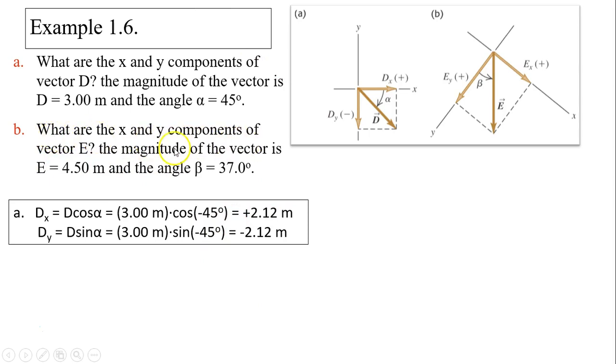Example B. What are the x, y components of vector E? Magnitude of vector E equals 4.5 meters and angle beta equals 37 degrees. This question is a little different because x is pointing right, but positive y is down. So we can't really use cosine alpha or sine alpha directly. How do we solve this problem?